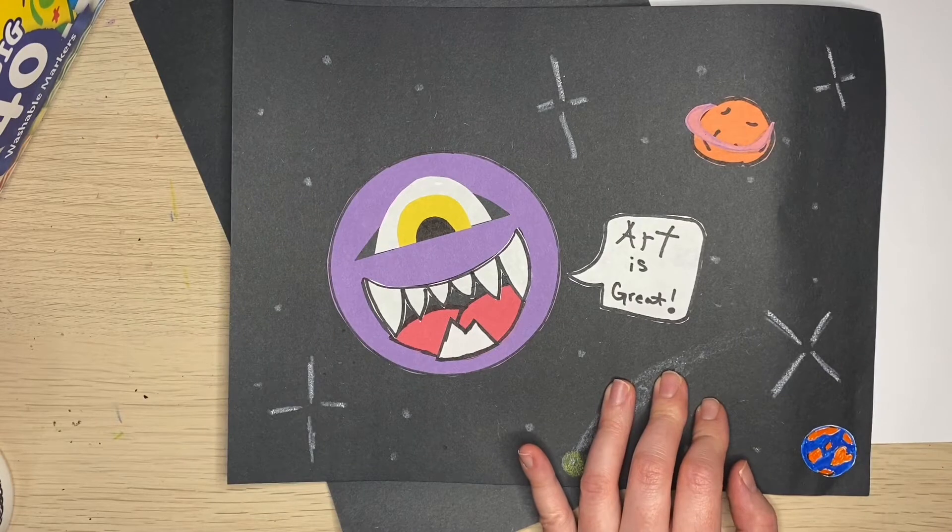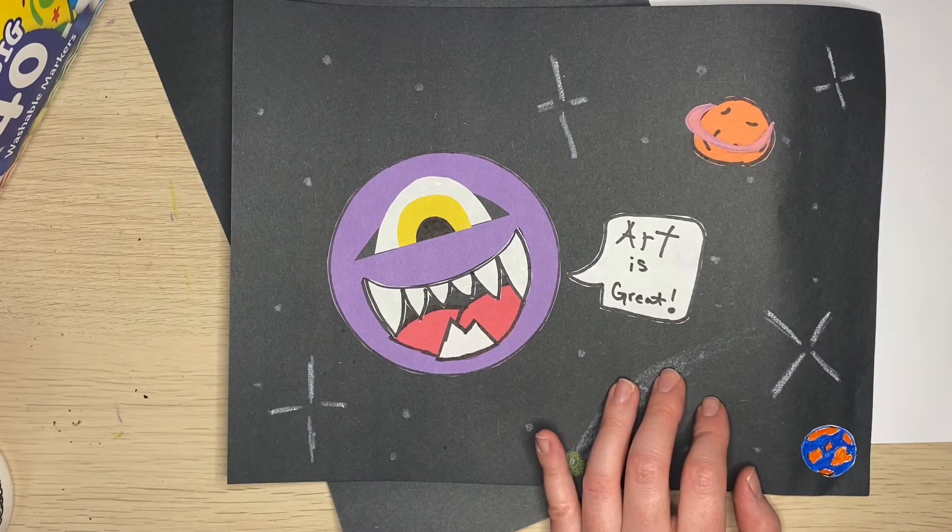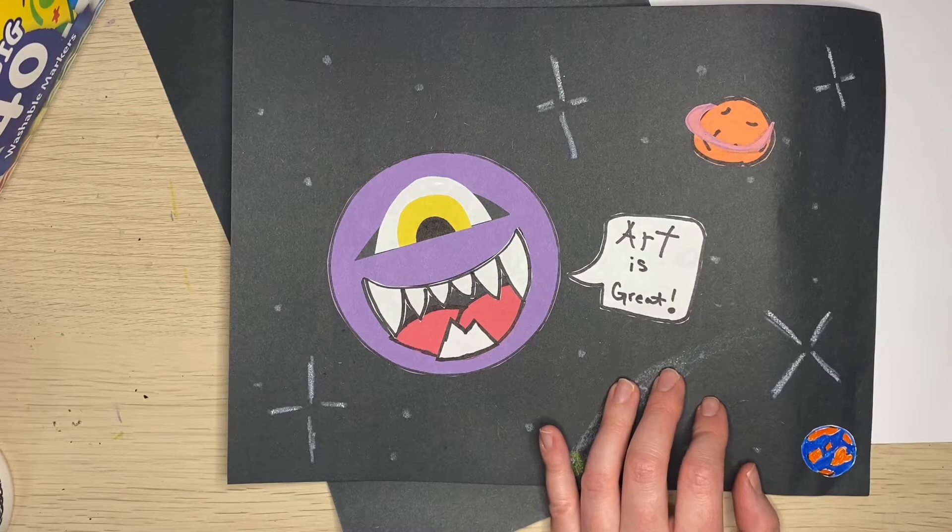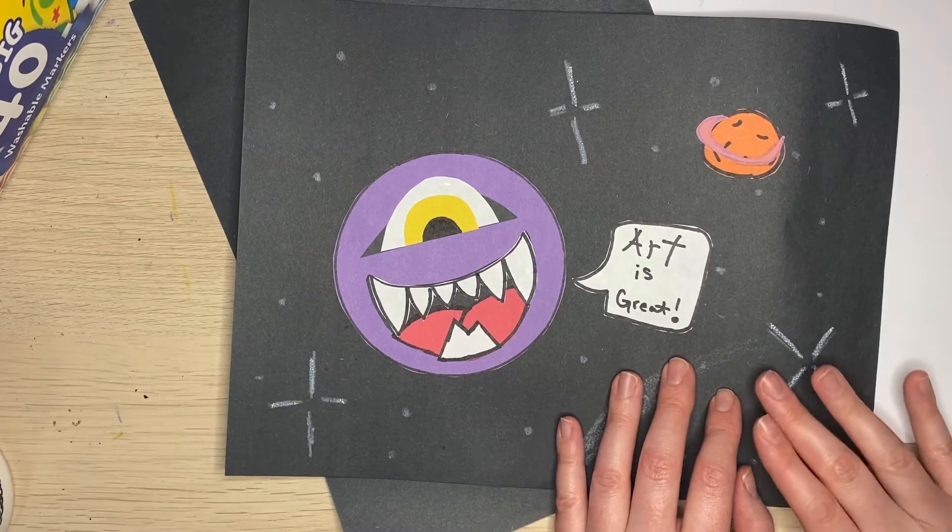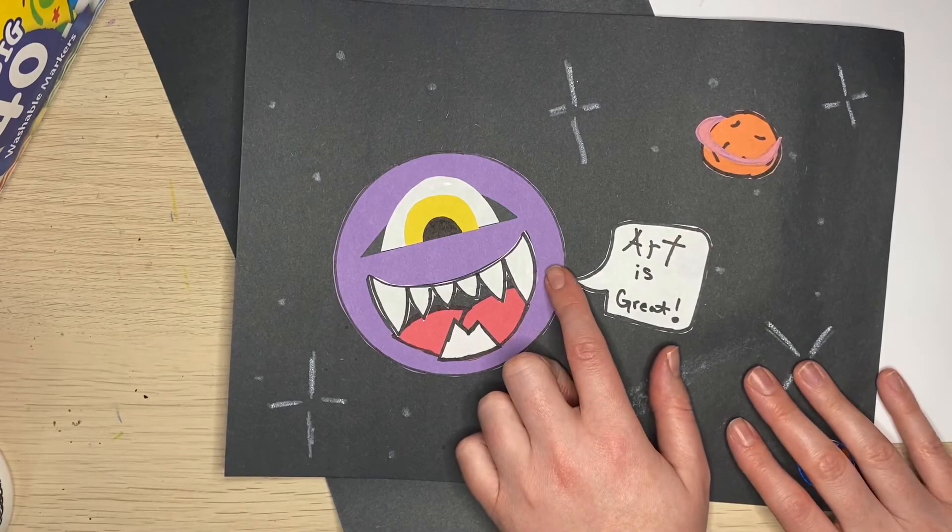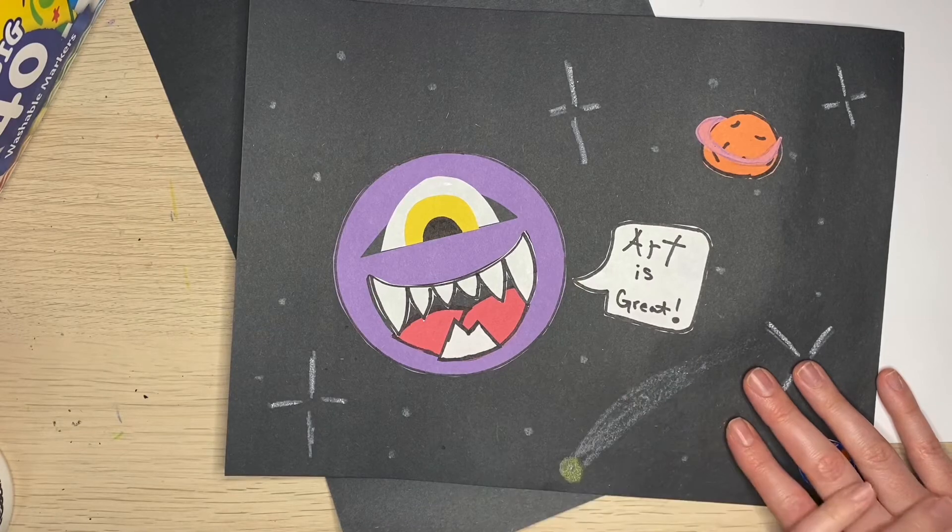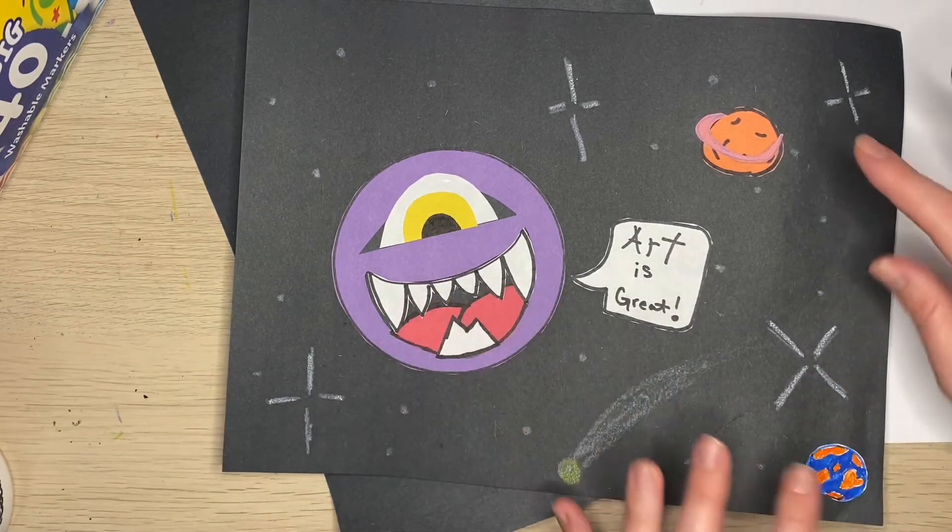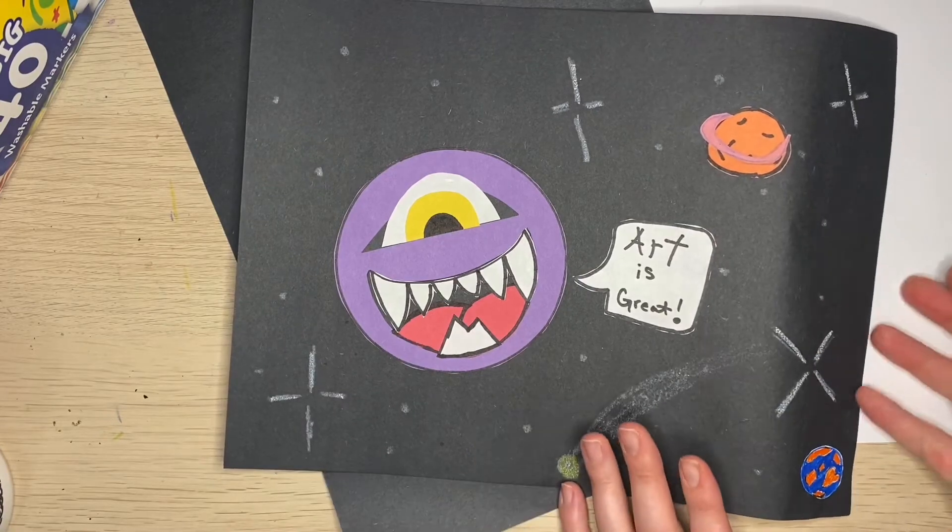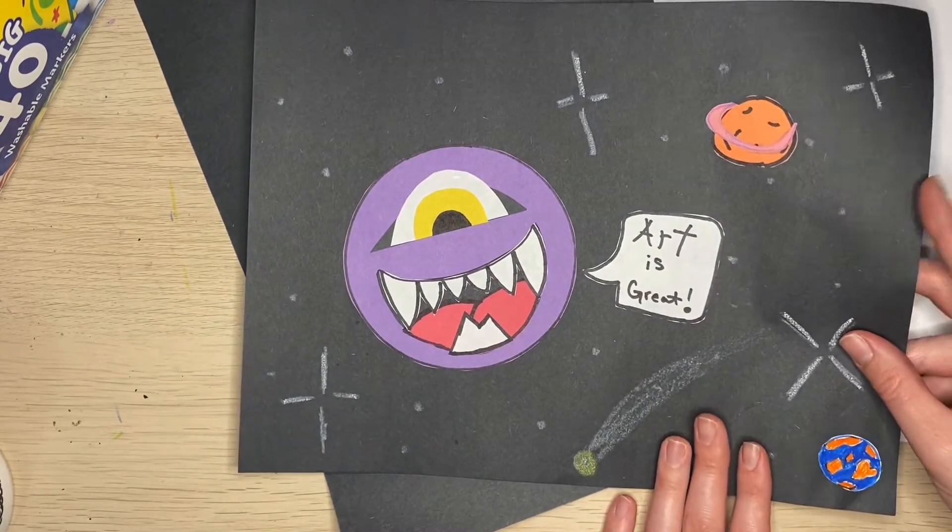So we're going to make our own spacescape. It's like landscape and seascape, but instead of land or water it's outer space. You get to design your own. Notice my other Larry Loudmouth was square and this one was circle. You could choose any shape you want. I'm going to do different planets, stars, different things.